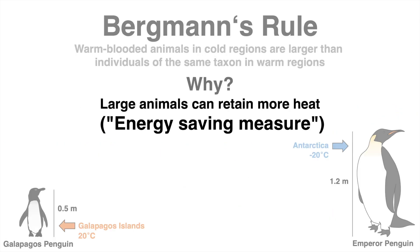The assumption proposed by Bergmann was that bigger bodies, which automatically go along with a decreased surface to volume ratio, can retain more heat than they lose. In cold environments such as Antarctica, this is an efficient energy-saving measure for warm-blooded animals such as birds and mammals. In contrast, warm environments would favor smaller bodies as they have greater body surface in relation to body volume to support heat reduction.